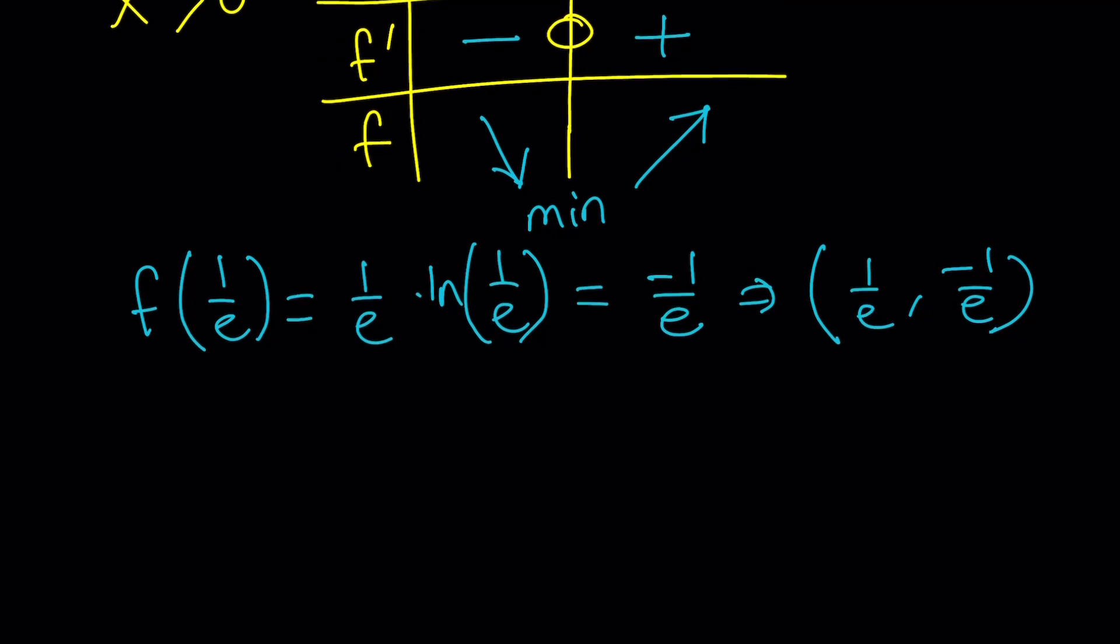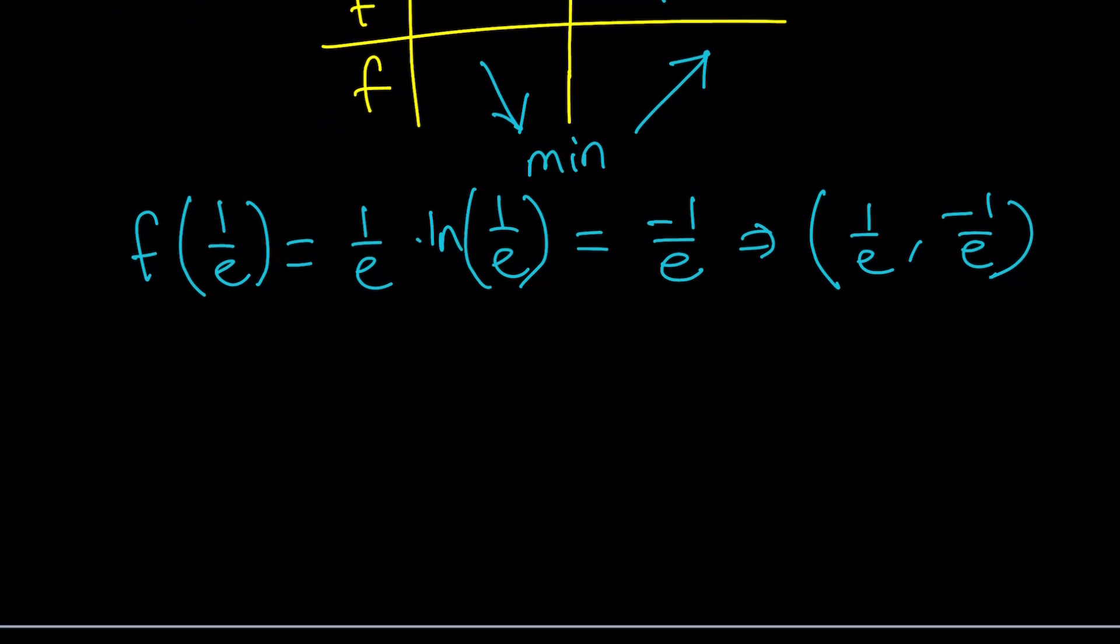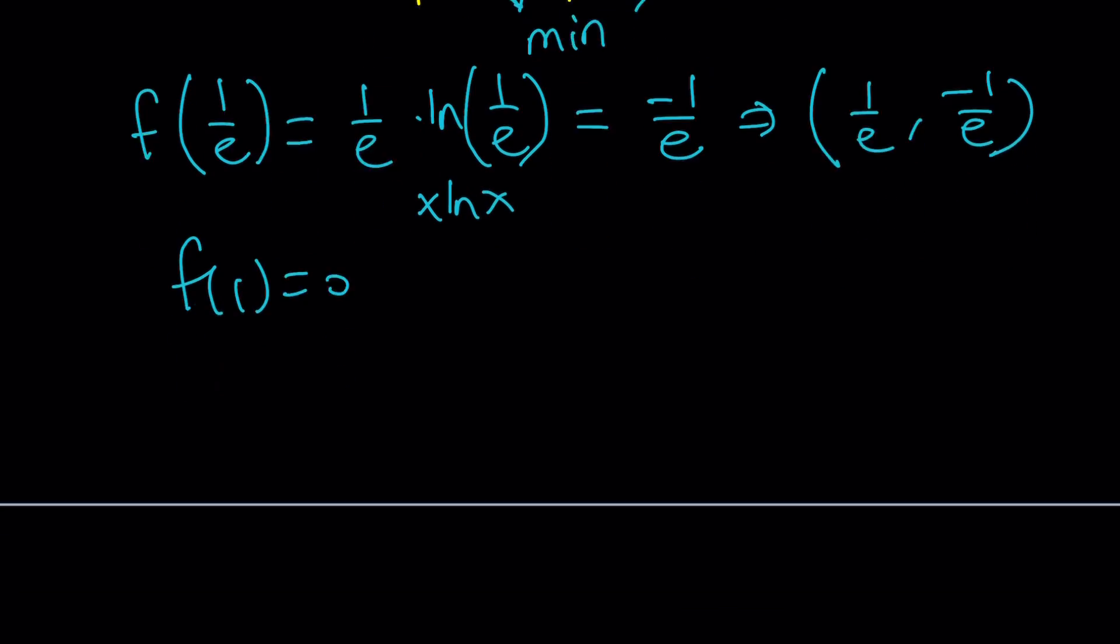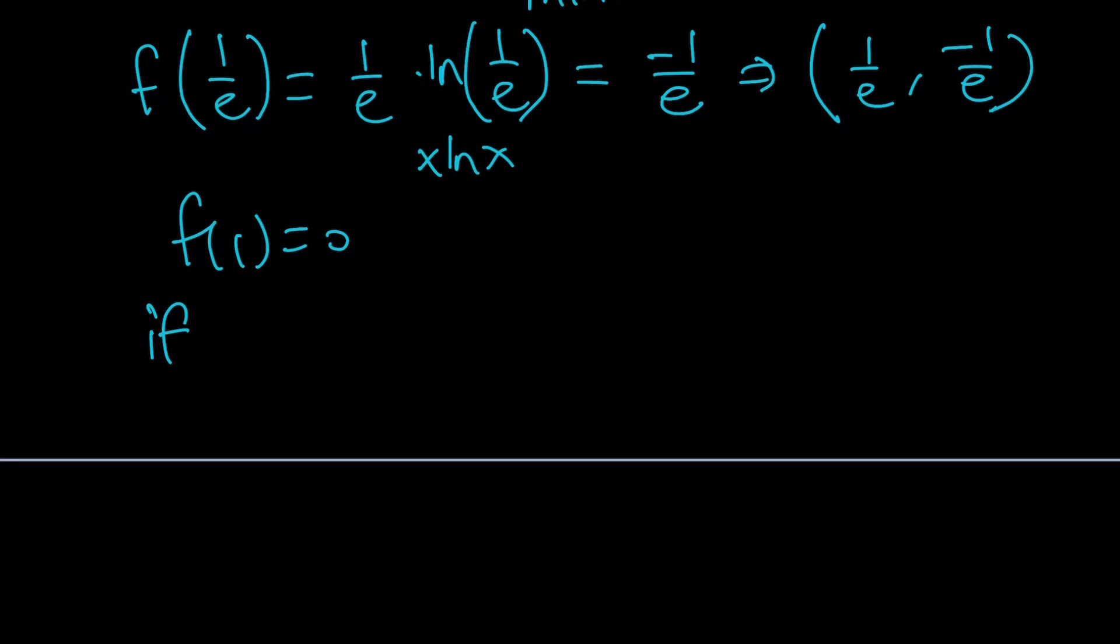Let me show you how. Well, if you replace x with 1, f of 1 will be 0 because of the ln function. Remember, our function is x ln x. When you replace x with 0, I mean 1, f of 1 will be 0. Now, here's the thing. And x must be positive. You know that, right? Cool.